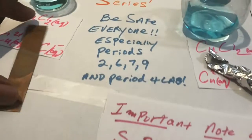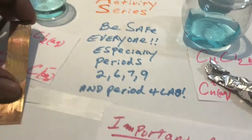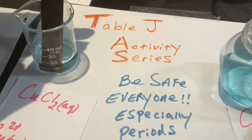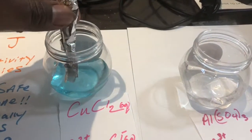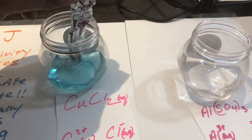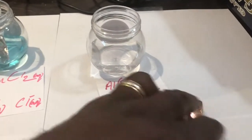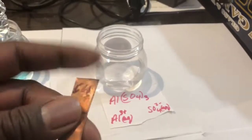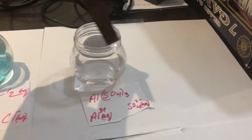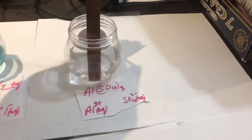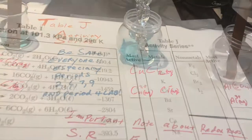So here's what we're going to do. Situation one: take this copper solid and put it in a copper solution. Situation two: take the aluminum and put it inside the copper solution. Situation three: take the copper solid and put it inside the aluminum solution, and we'll see what happens.